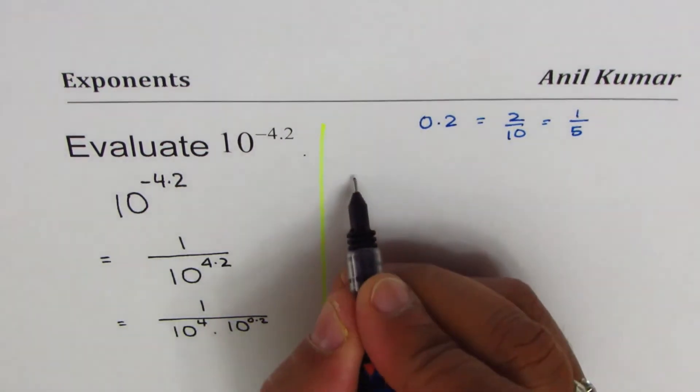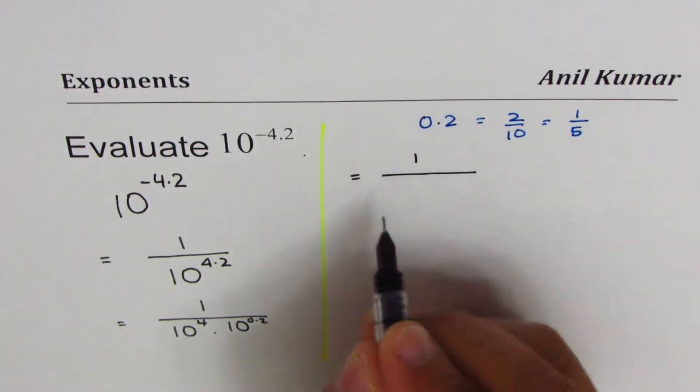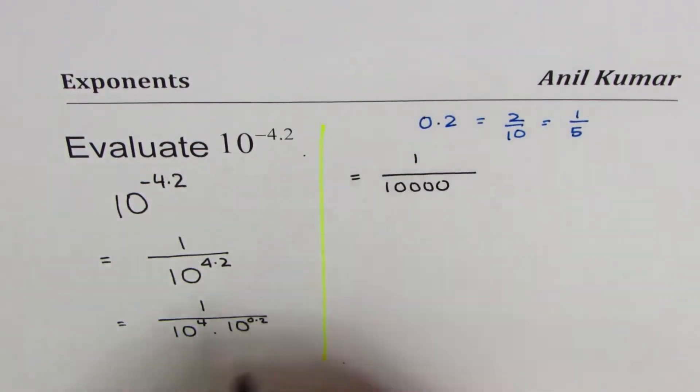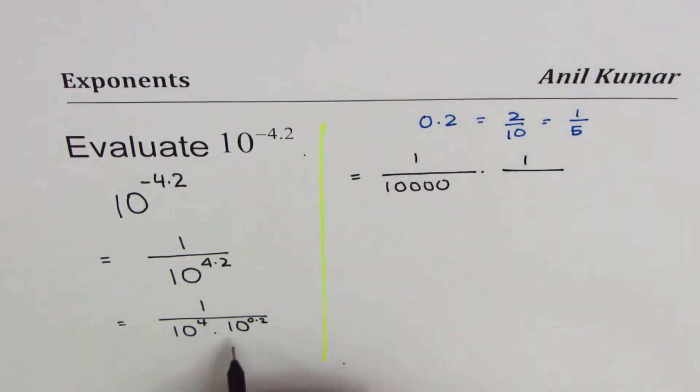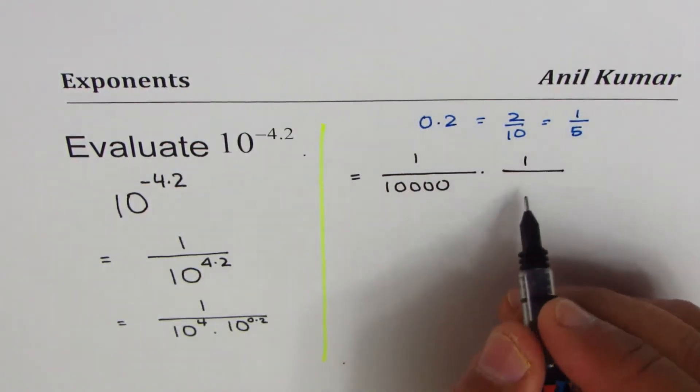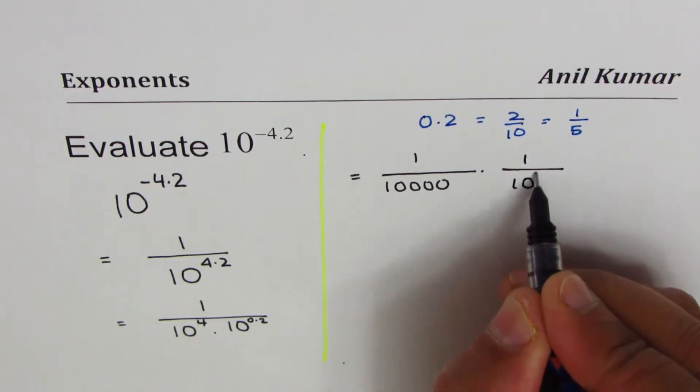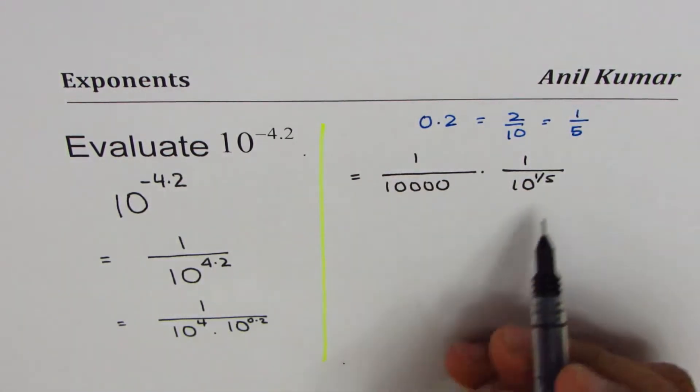So what we can write this as 1 over 10 to the power of 4, times 1 over 10 to the power of 0.2. I'm replacing 0.2 by 1 fifth, so 10 to the power of 1 over 5. That becomes 10 to the power of 0.2.